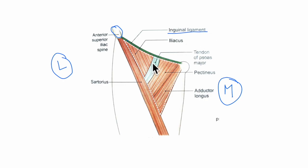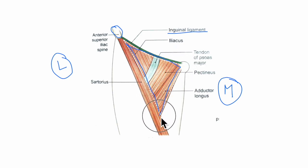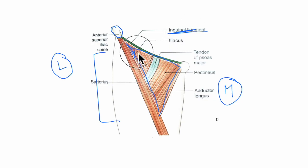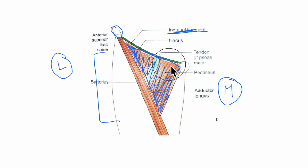The femoral triangle is a triangular depression on the front of the upper one-third of the thigh, immediately below the inguinal ligament — that is the structure in green that you see right here. This entire triangular area is the femoral triangle.